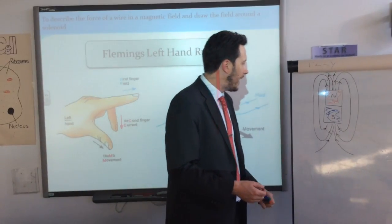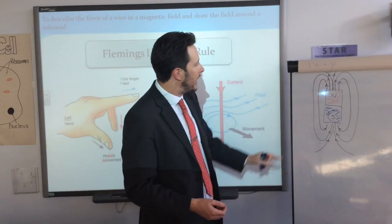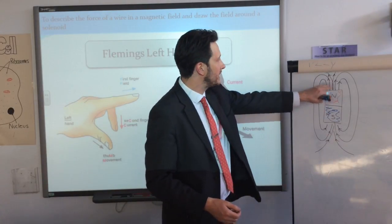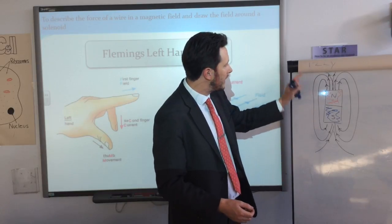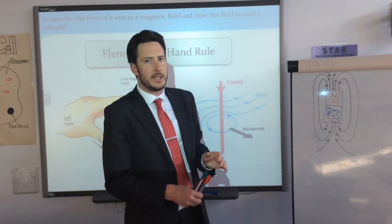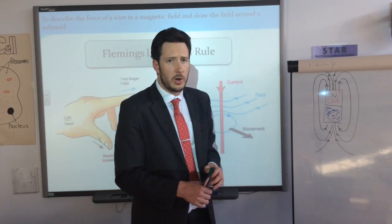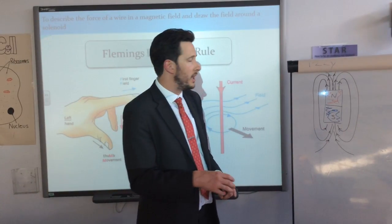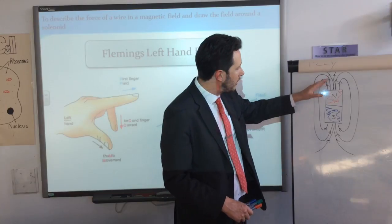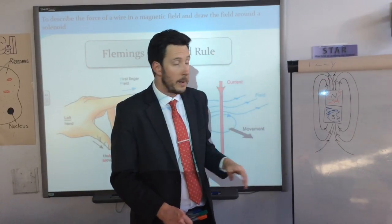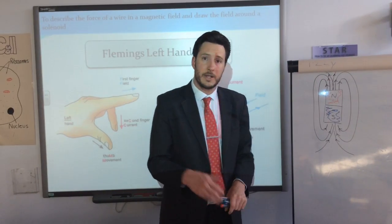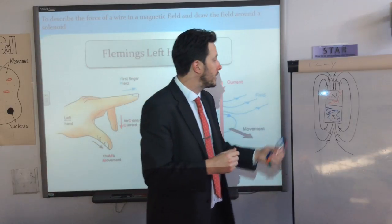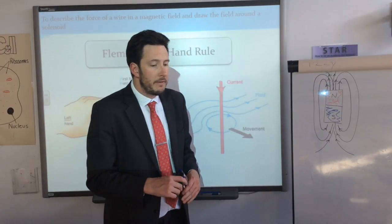We've got our plot in the field around a magnet, and we can plot the magnetic field lines using a plotting compass — always out of the north, into the south. The key point is that the magnetic force is strongest near the poles of the magnet because the field lines are closest together there. The closer the field lines, the stronger the magnetic force.